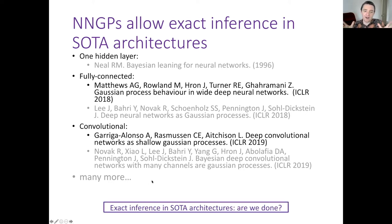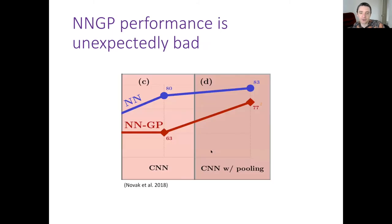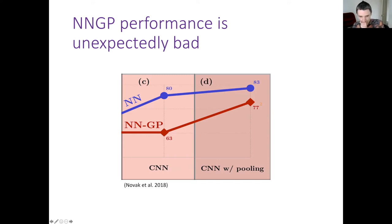At a high level, we now have exact inference in state-of-the-art convolutional architectures like ResNets — so we should get excellent performance with amazing uncertainty estimates. But sadly the practical performance is really bad. Looking at a Google Brain figure comparing an NNGP with a standard SGD-trained neural network on CIFAR-10, the NNGP gets only 63% accuracy, which is remarkably dreadful.